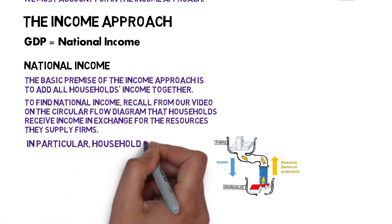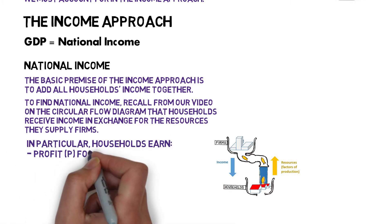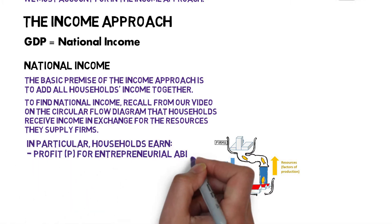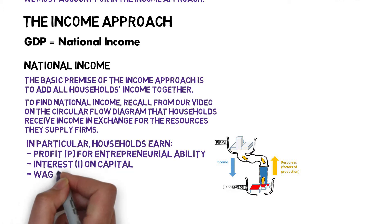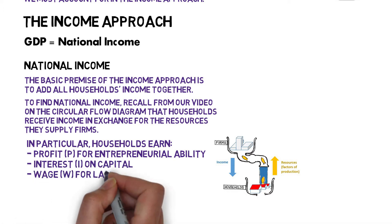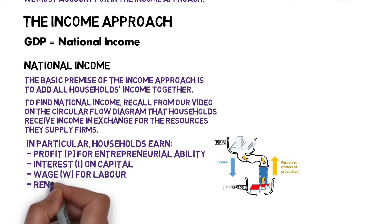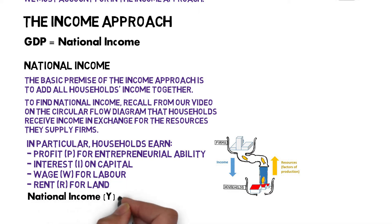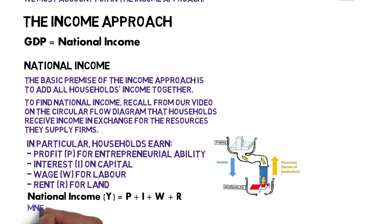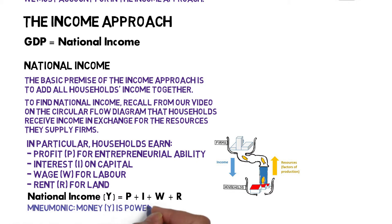In particular, households earn profit for entrepreneurial ability, interest for capital, wage for labor, and rent for land. And so national income, Y, is the sum of these variables together. If you want a mnemonic, you can remember: money Y is power — P-I-W-R.